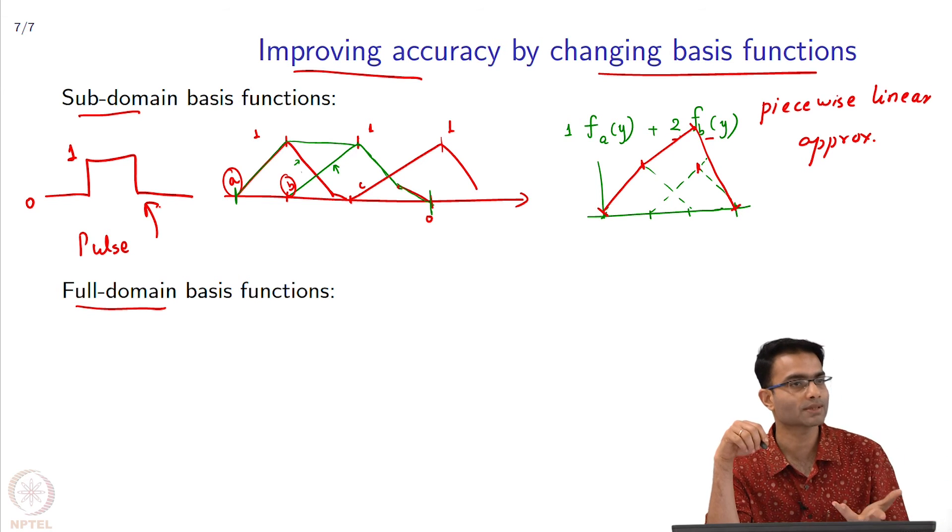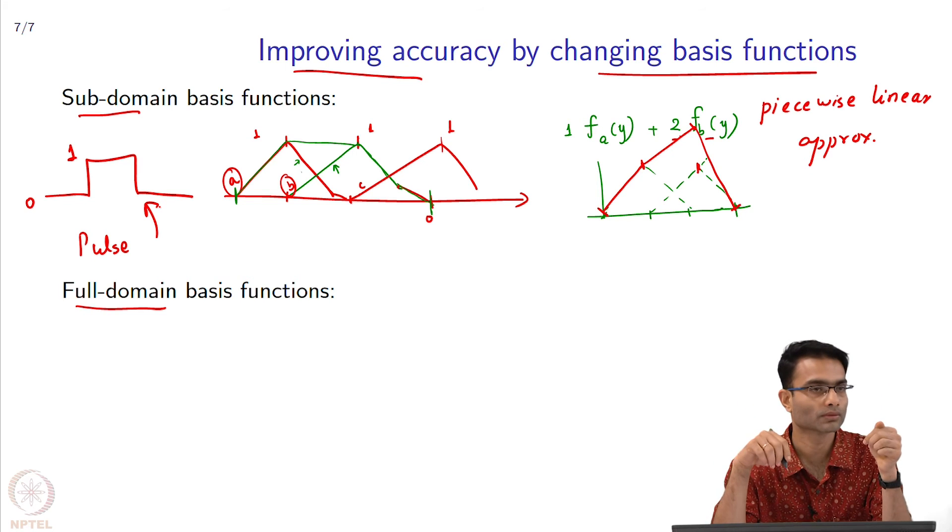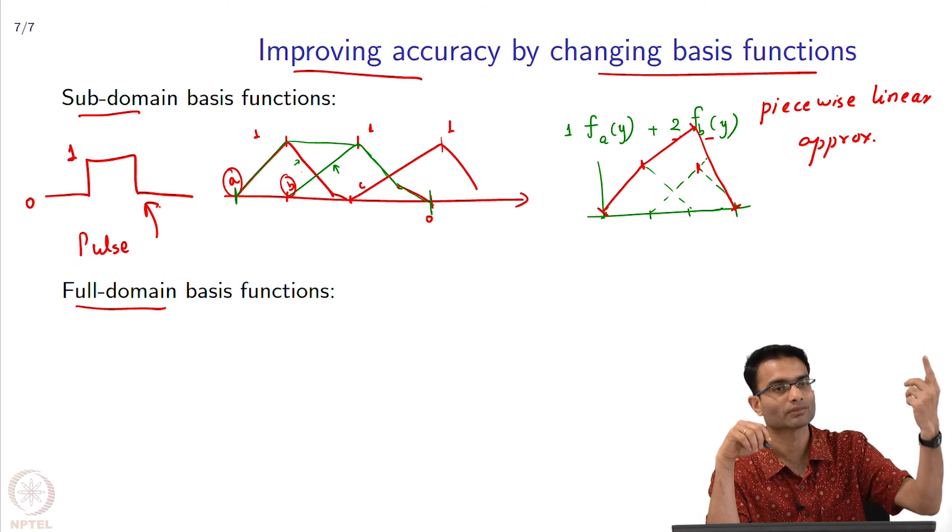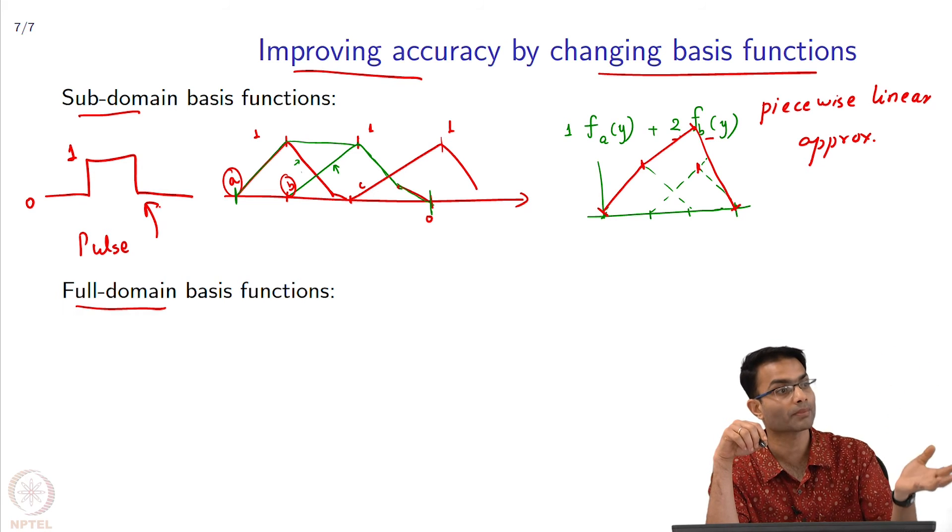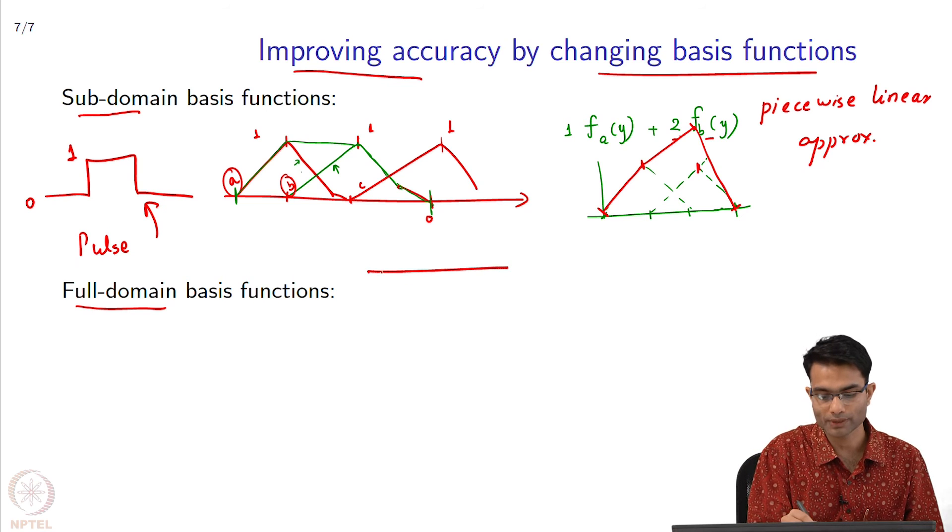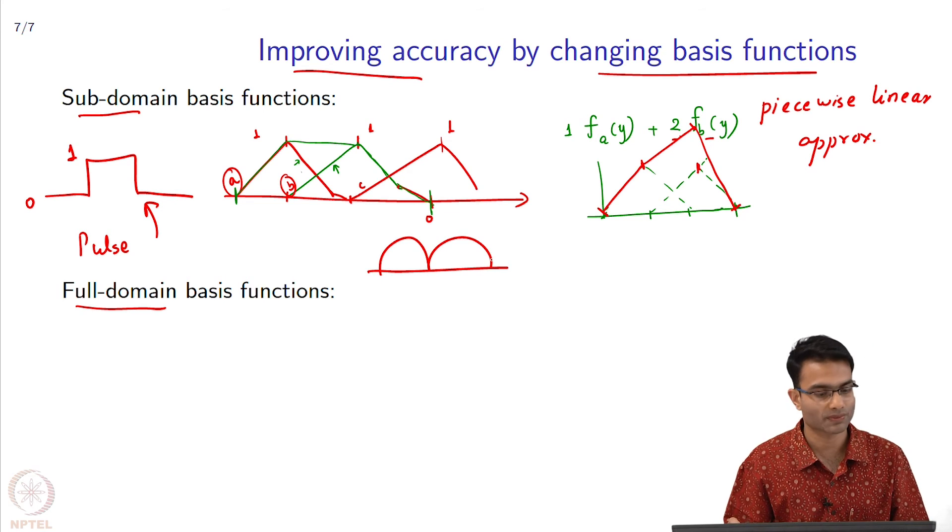The only price you have to pay now is calculating a_mn will require a little bit more work. Earlier in the numerator, my g was just 1, so it was very simple to integrate. Now it will be a linear function. You can extend this idea—you do not have to deal with lines, you can deal with half cosines; these can be your basis function. Those are about sub-domain basis functions.